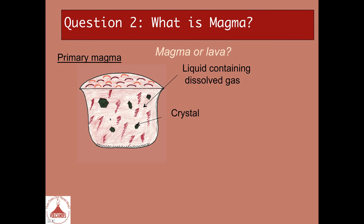But the gas is dissolved. That means it is strongly associated with the liquid, with the molecules of the liquid, or the compounds of the liquid. And what we can really see and observe is the liquid and the crystals.